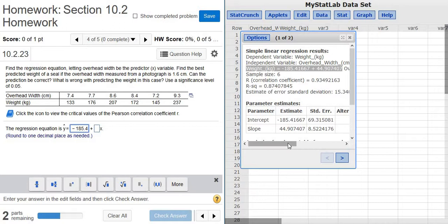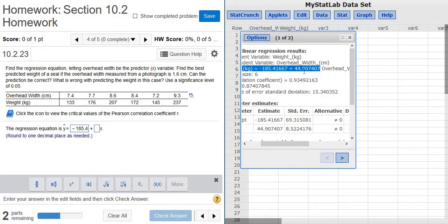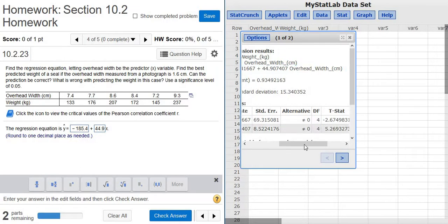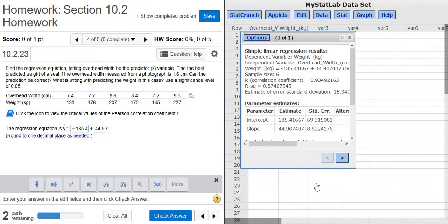And then it looks like the coefficient of the x is 44.9. You see x is the overhead width, that's our x, and the y-value is the weight. Let's try it.